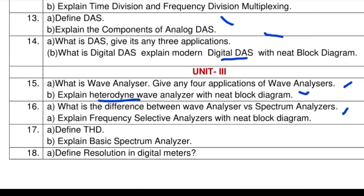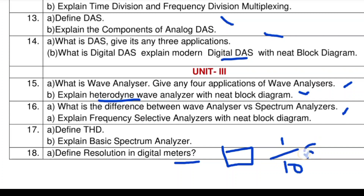The next question is about resolution in digital meters. What is resolution and how does resolution help digital meters? The smallest increment that a meter can detect is known as resolution. The formula is 1 divided by 10 to the power n, where n is the number of digits used — this is also important.